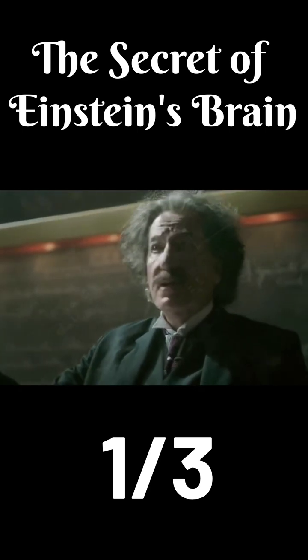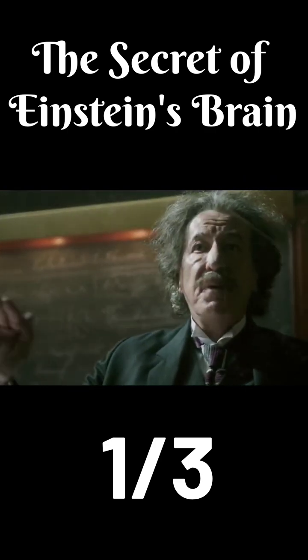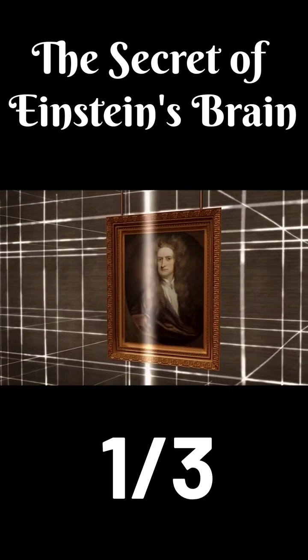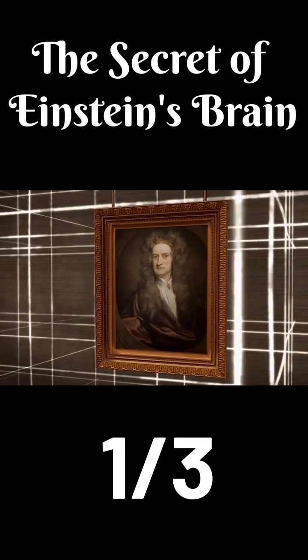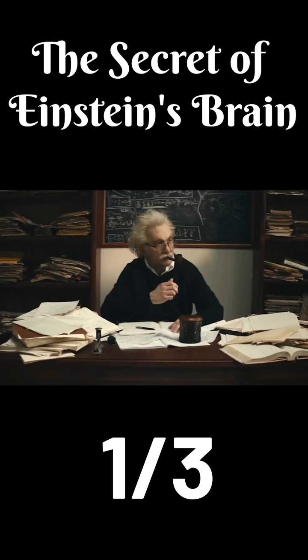In his 76 years of life, Einstein made monumental contributions to human scientific endeavors. He overturned Newton's concept of absolute space and time, fundamentally reshaping humanity's understanding of space and time.